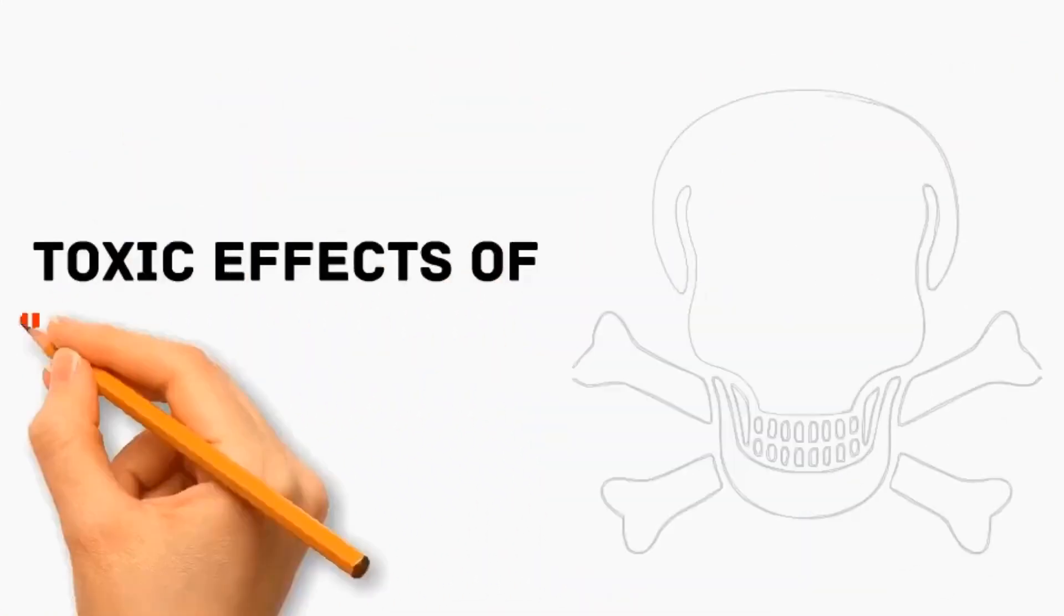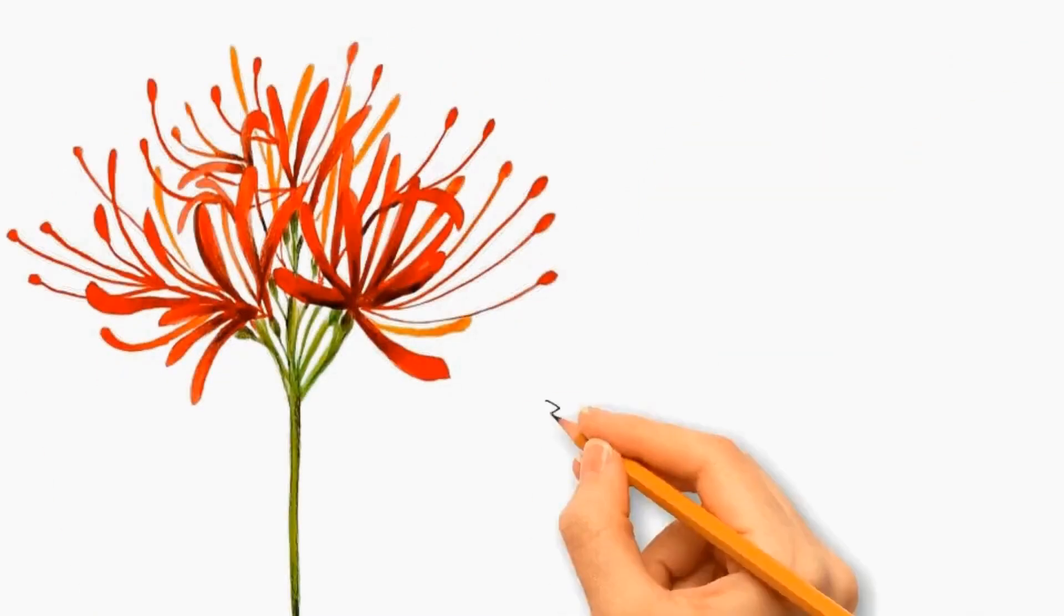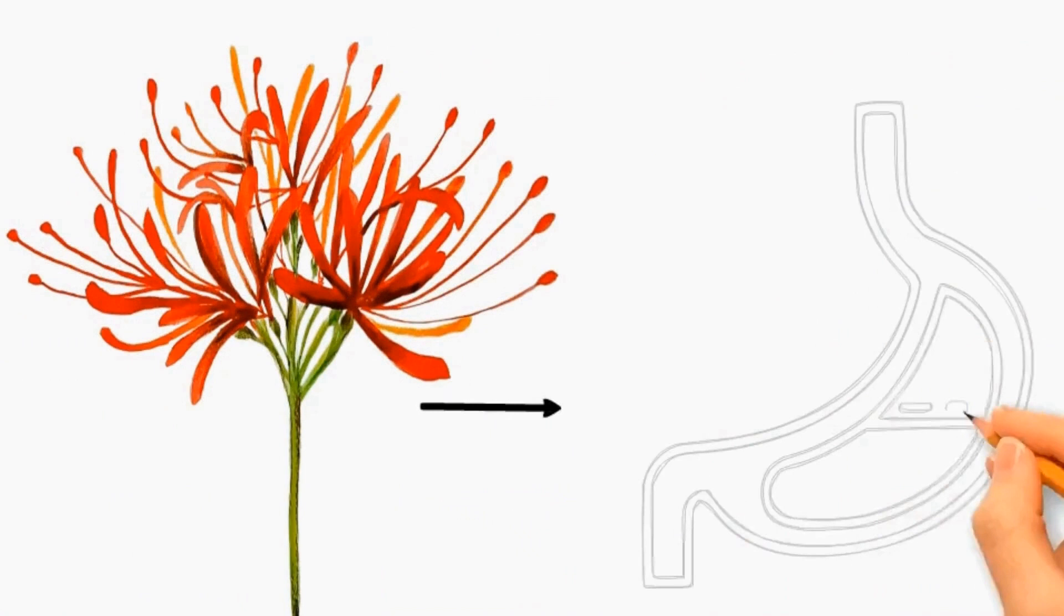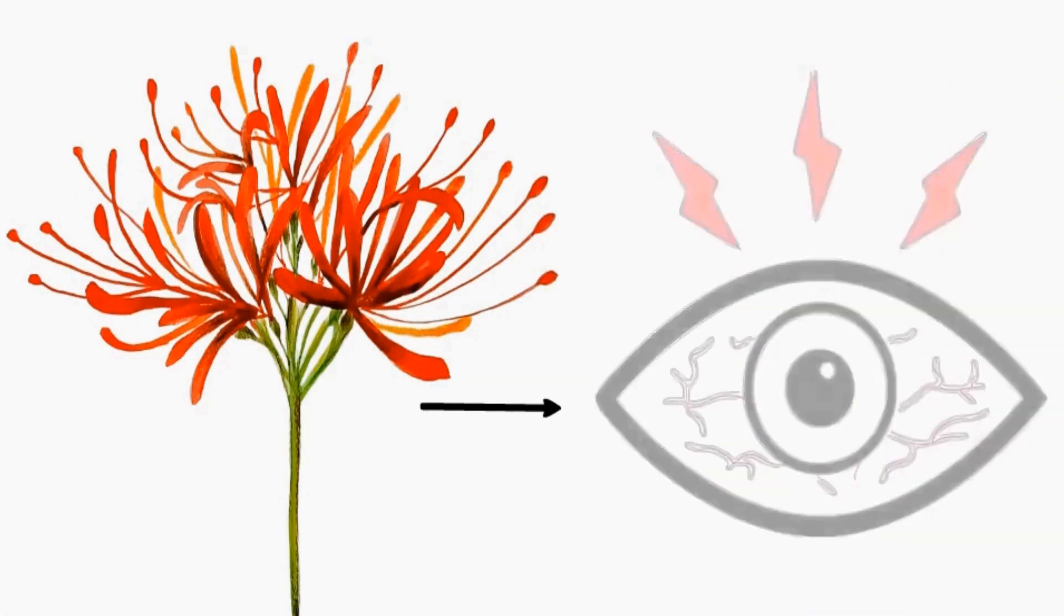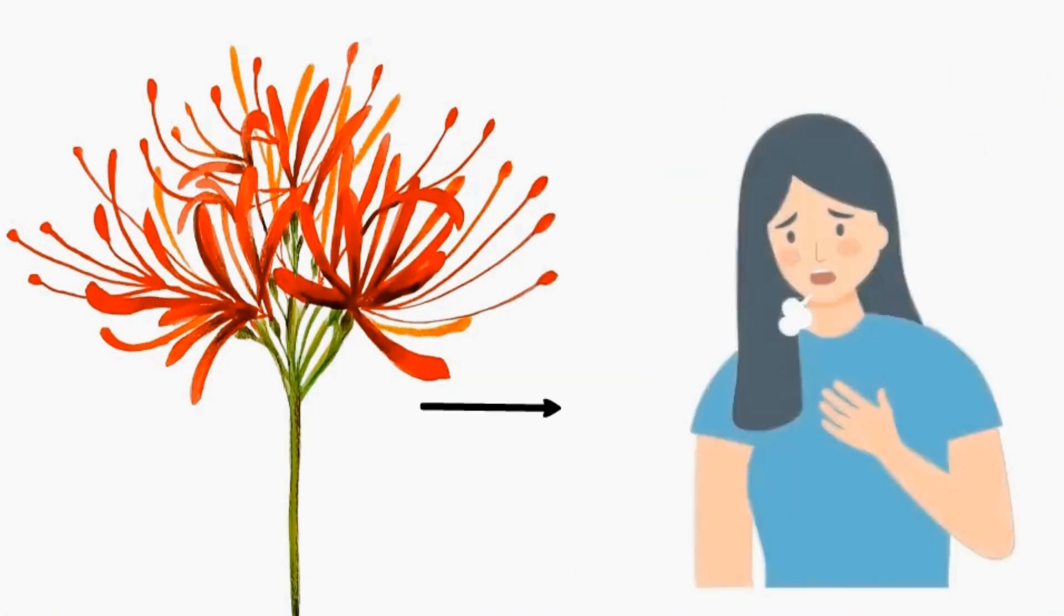Let's discuss the toxic effects of Red Spider Lily. Lycoris radiata contains some toxic compounds that can cause gastrointestinal irritation if ingested. Its bulbs can cause skin irritation. Contact with its sap can cause eye irritation. It can lead to difficulty in breathing.